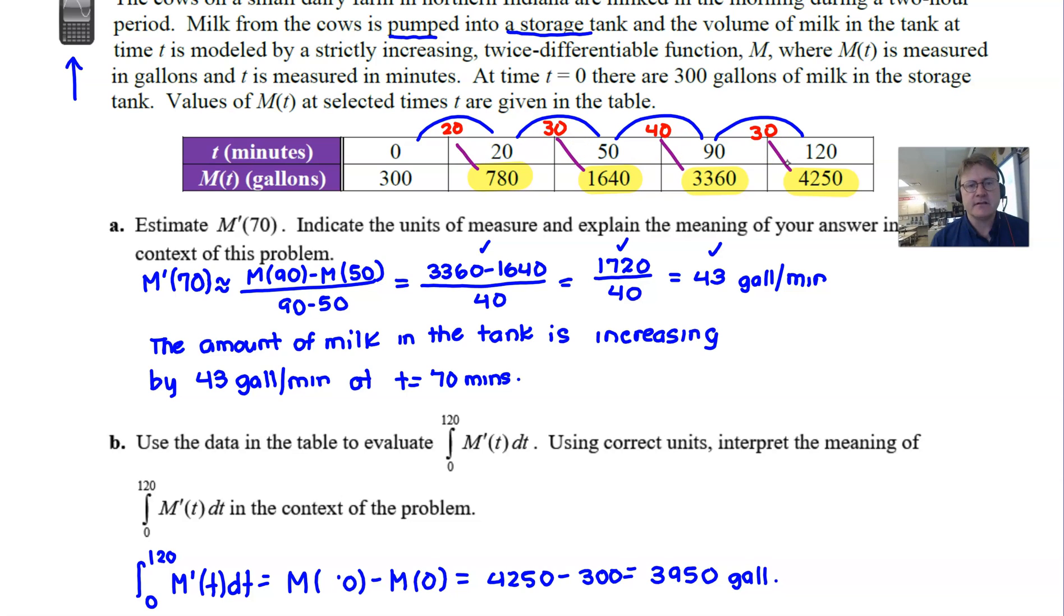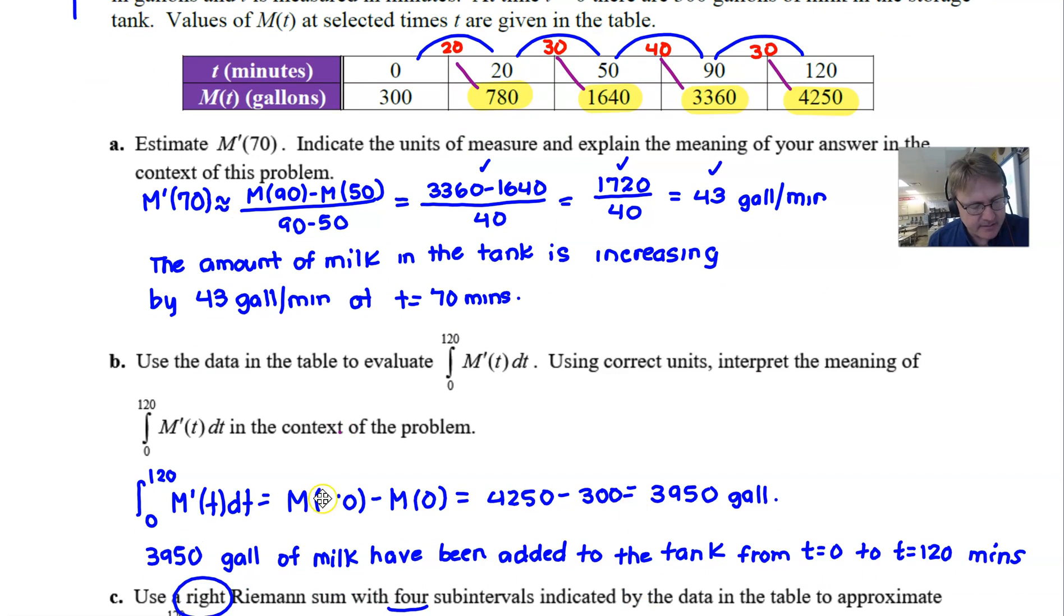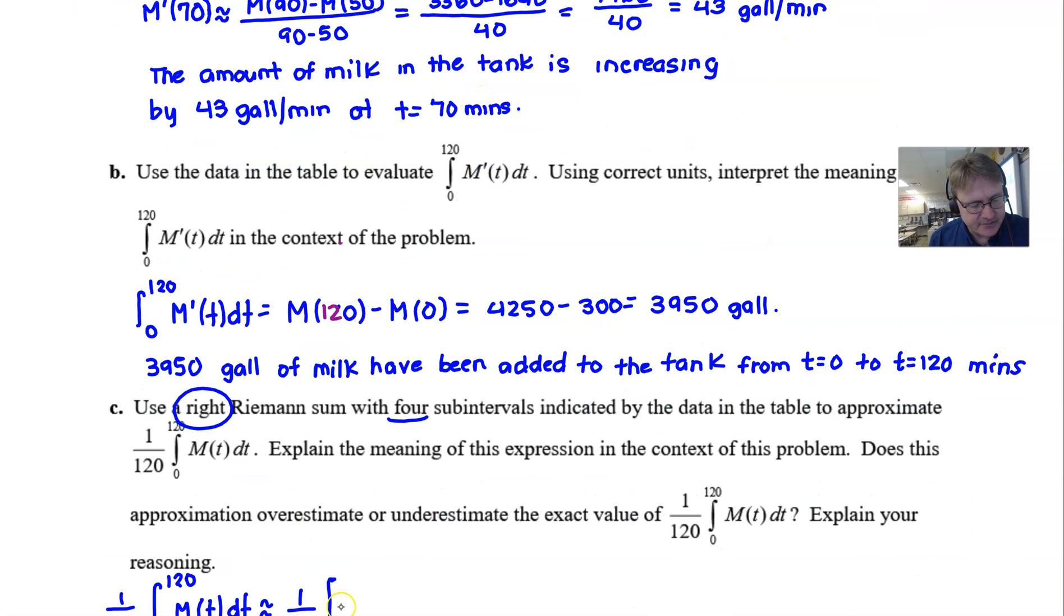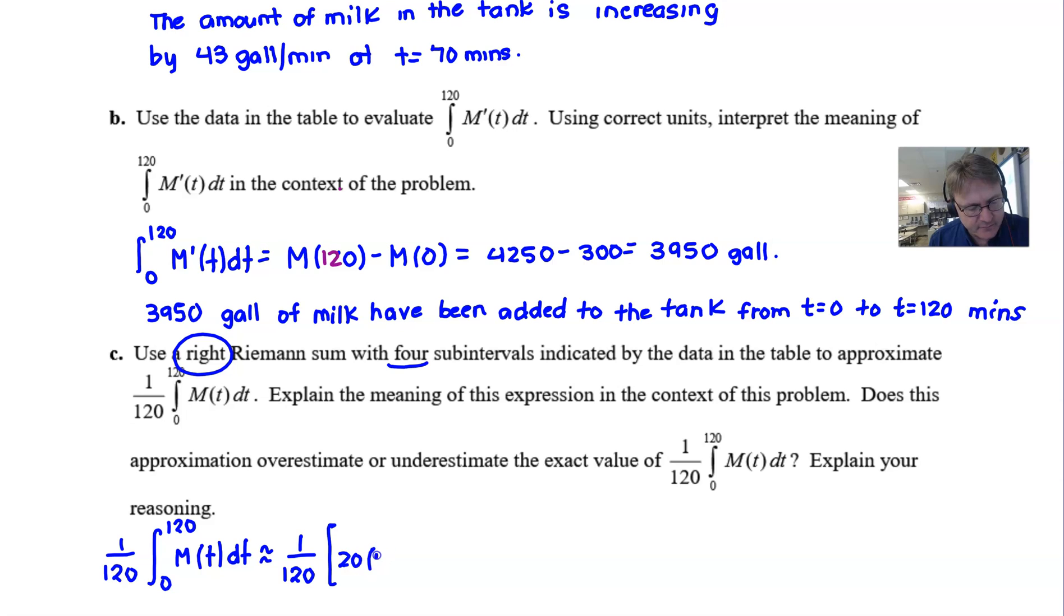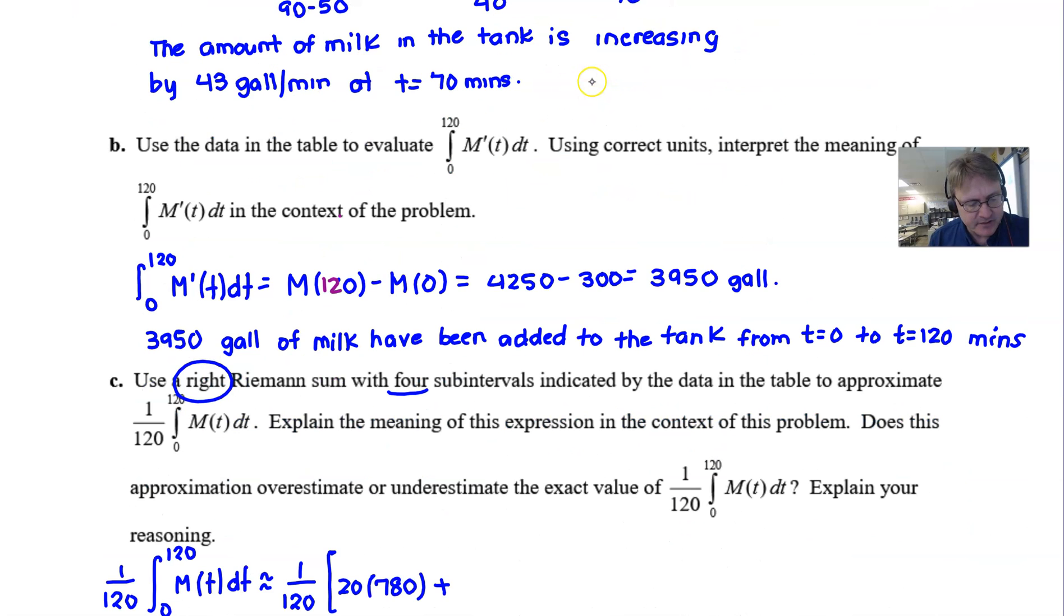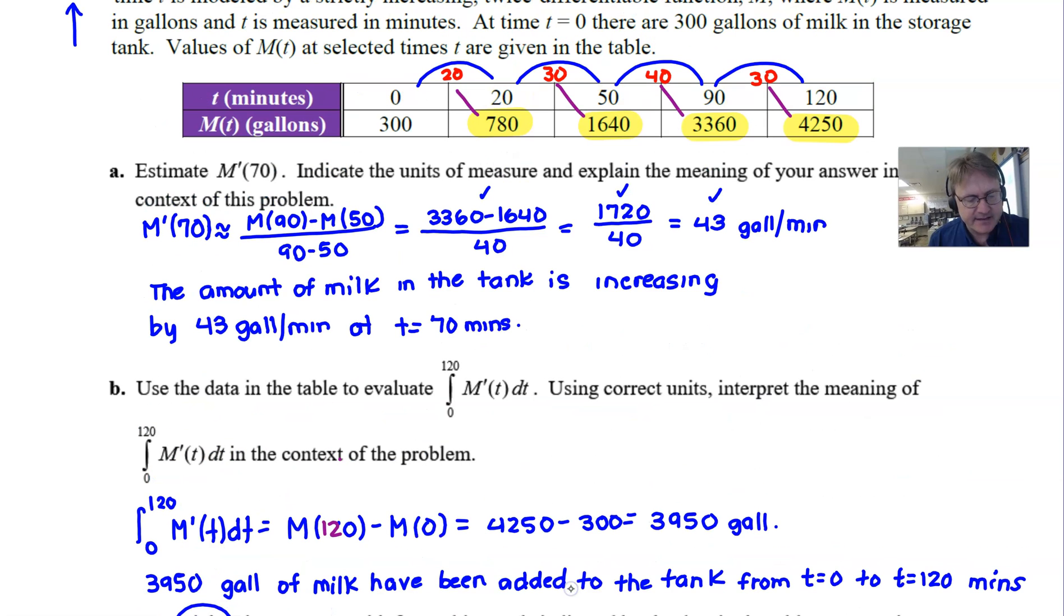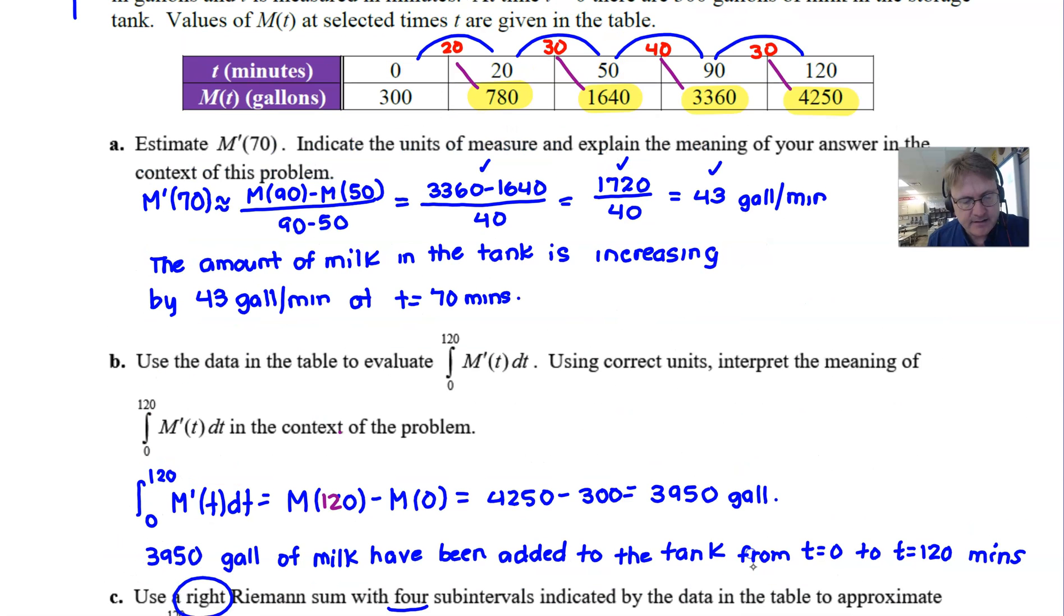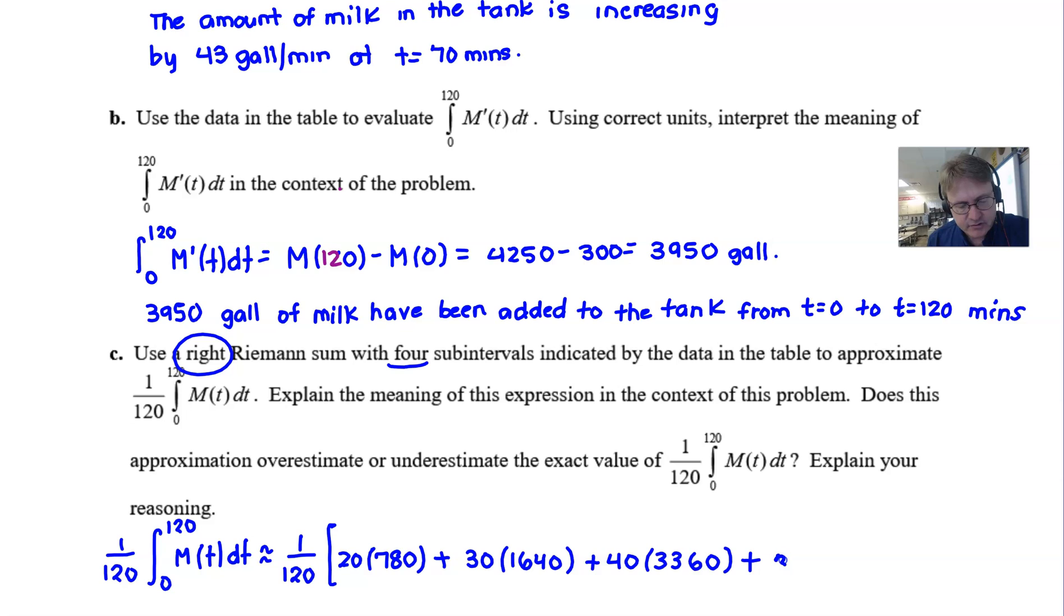So essentially what you're going to do is just multiply these connected numbers that I have and then add their results to get the Riemann sum. All right, so if I go back here, I forgot my 120 there, so if I go back here I'm going to have to scroll back and forth, so I apologize for that. 20 times 780 is going to start things off for my first rectangle, and then to that I'm going to add 30 times 1640, and then to that 40 times 3360, and finally 30 times 4250.